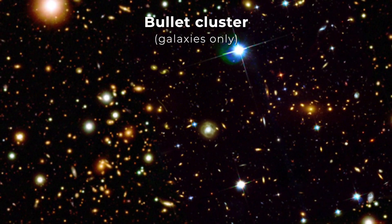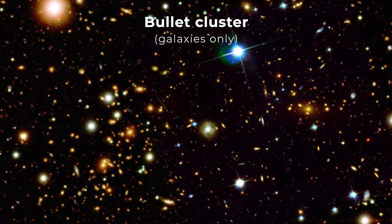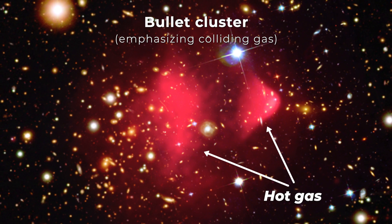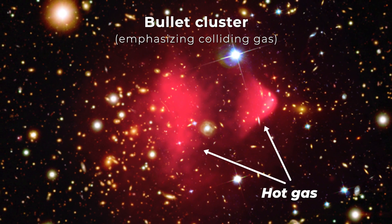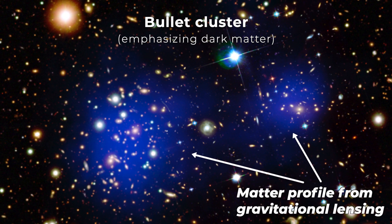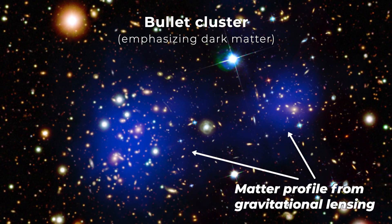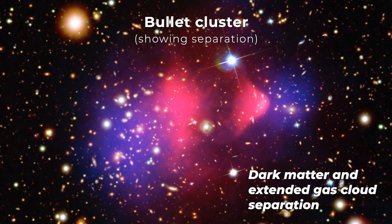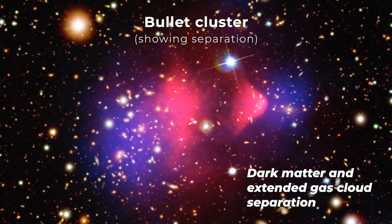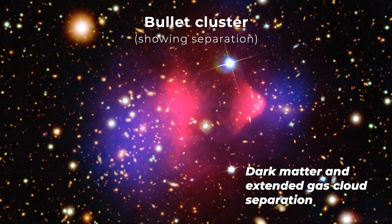The bullet cluster is an astronomical phenomenon where two clusters of galaxies pass through one another. If dark matter is real, then a cluster of galaxies consists of galaxies, hydrogen gas, and dark matter. When they pass through one another, the galaxies miss and pass through and the hydrogen gas collides and heats up in the middle. If dark matter is real, then it should stay with the galaxies. And if dark matter isn't real, then it should stay with the gas. And the data says it stays with the galaxies. That's respectable evidence that dark matter is real.